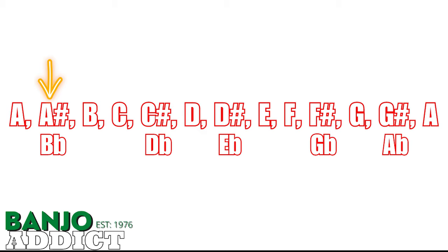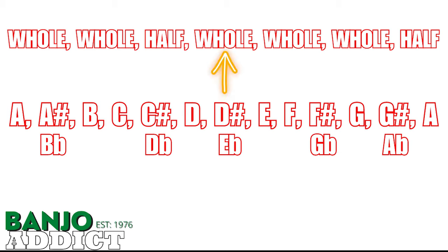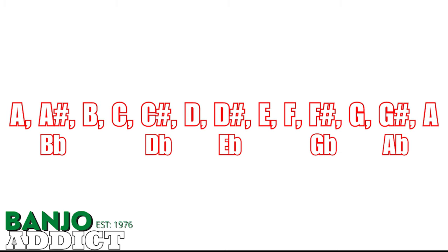The notes in a scale are A, A-sharp or B-flat, B, C, C-sharp or D-flat, D, D-sharp or E-flat, E, F, F-sharp or G-flat, G, G-sharp, and A-flat. Now, if you start at any note on that scale and use the pattern whole, whole, half, whole, whole, whole, half, it will give you a major scale.